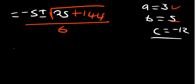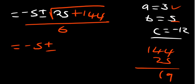So negative 5 plus or minus. 25 plus 144 is what? So that is 169. So the square root of 169 is 13, over 6. So what are the two possible solutions that we should expect to have in such a case?